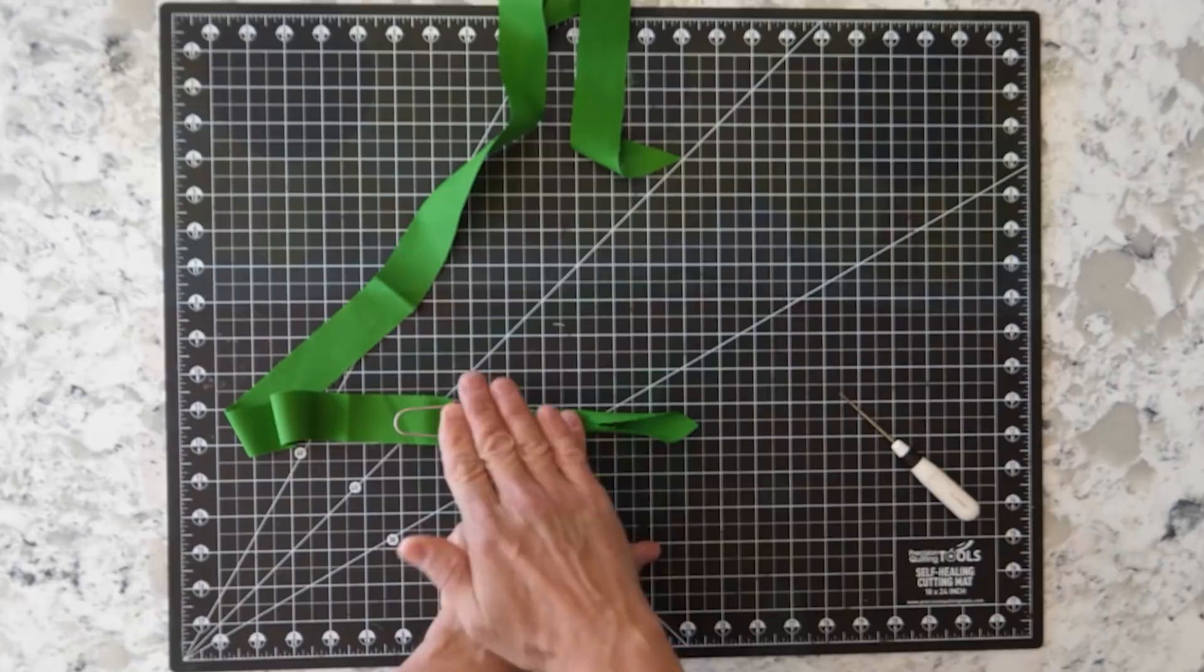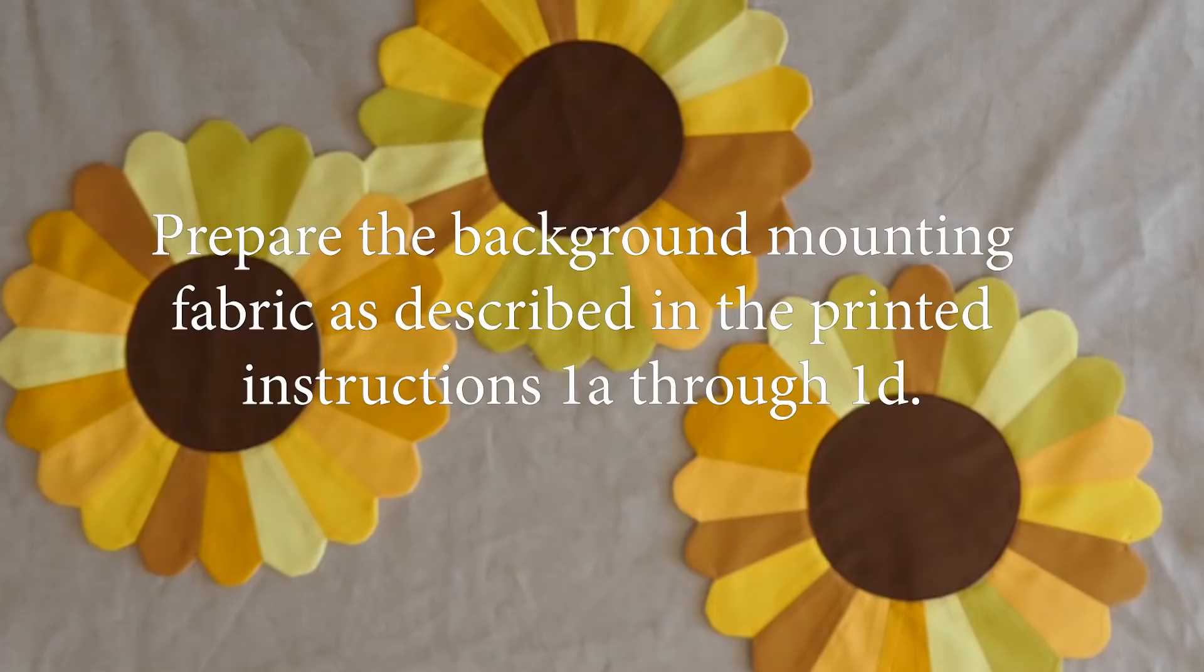Now that you've sewn your three rows of flower pots, you've prepared your stem, and you've sewn your flowers, you're ready for final construction. Let's get to it.